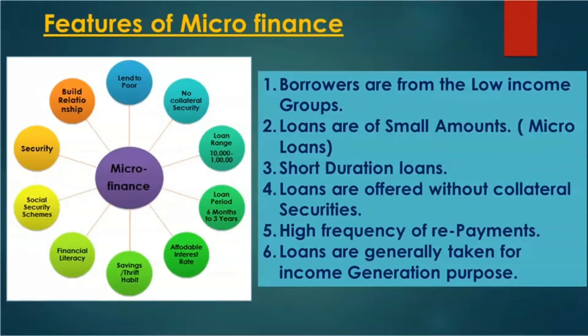Fifth, high frequency of repayments. When taking a loan from a bank, we pay once a month or once in six months. But in microfinance, repayments may be made every week or every day, so the loan is closed very quickly. Sixth, loans are generally taken for income generation purposes. Using these loans, members must purchase capital goods — like a tractor or raw materials — to generate income. This promotes income generation, which is one of the most important features.